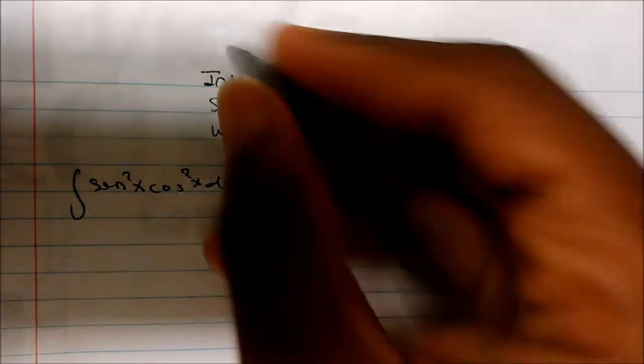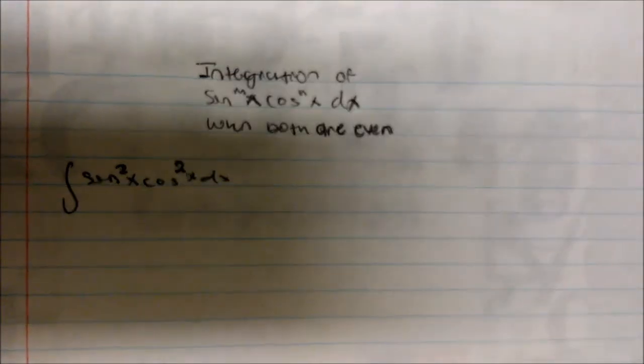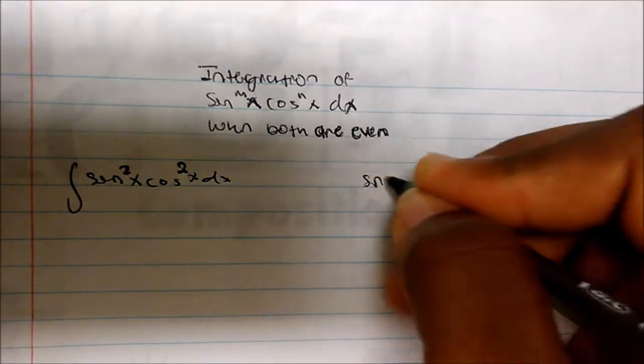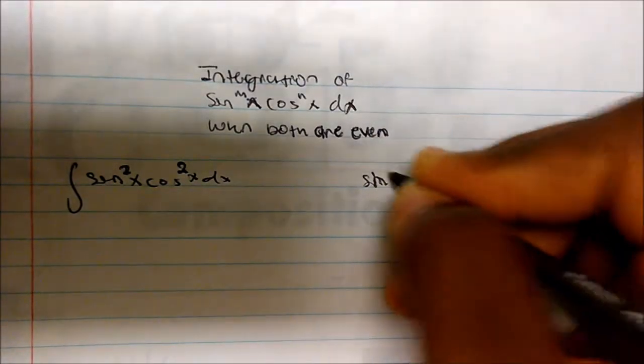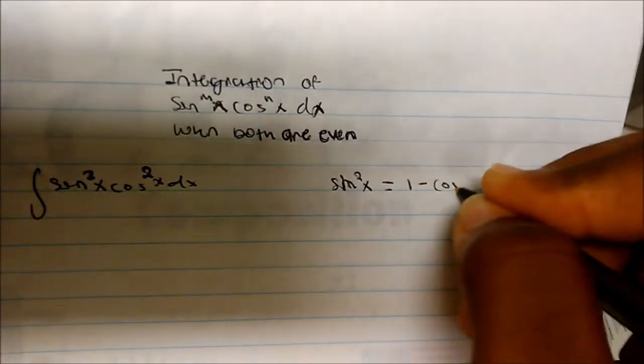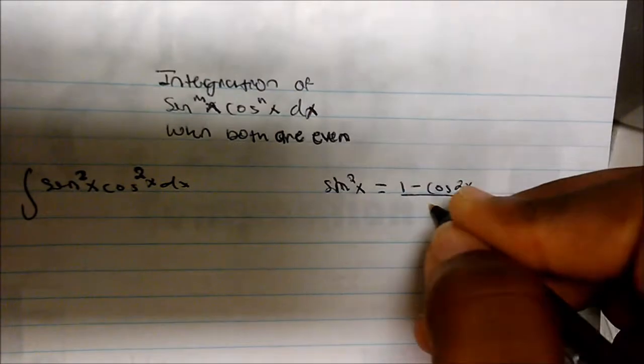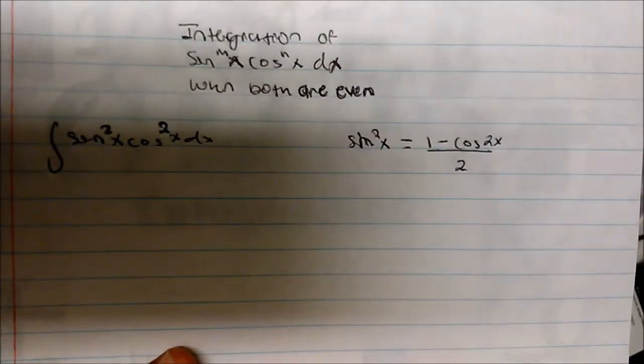The idea is that whenever we have some sort of even power — especially in this case when both are even — we use our identities. What we should know is that sine squared of x is actually (1 minus cosine 2x) over 2. We've seen this before.